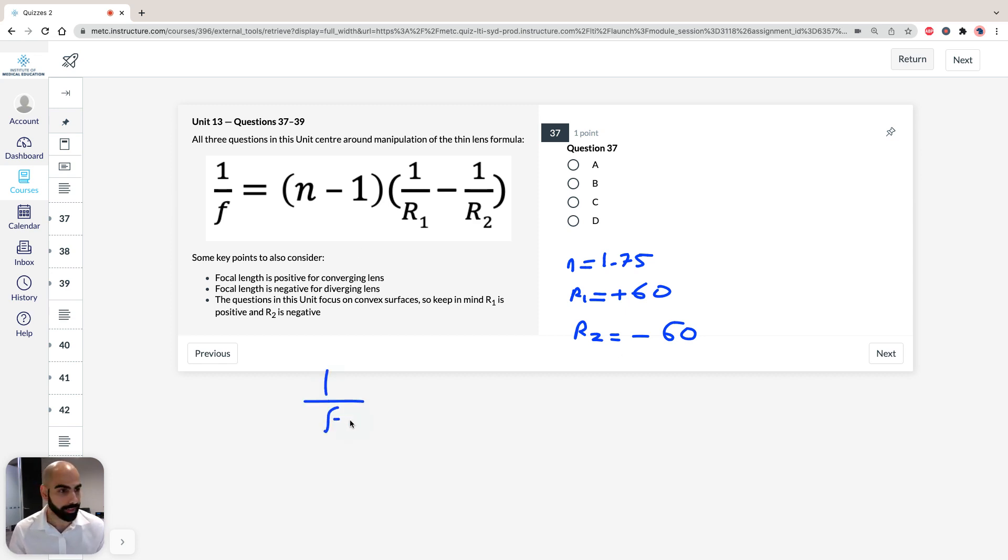So 1 over the focal length is going to equal, so 1.75 minus 1 times 1 over, remember it's plus 60, minus minus 1 over 60. So that's going to equal, so 0.75, let's keep it as a fraction, 0.75 is 3 quarters. So 1 over 60 plus 1 over 60 is 2 over 60. And so 2 over 60, which equals 1 over 30.